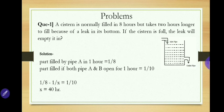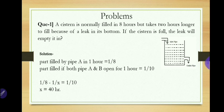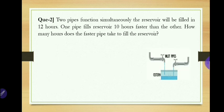The part filled by pipe A in one hour is 1/8. The part filled when both inlet and outlet are open in one hour is 1/10. Using plus for inlet and minus for outlet, we write: 1/8 minus 1/x equals 1/10. Solving this simple equation gives x equals 40. So the leak will empty the full tank in 40 hours.